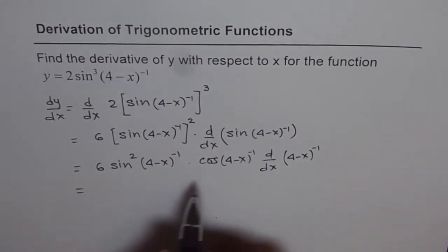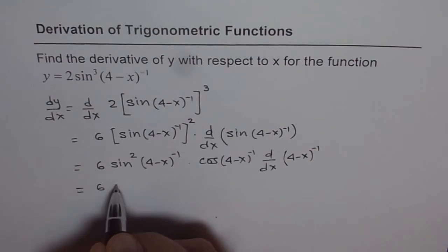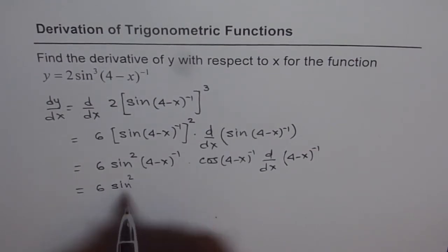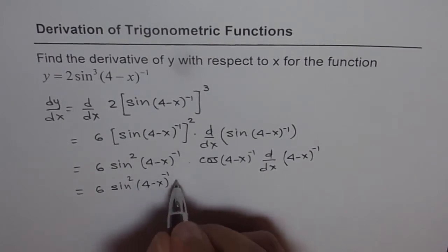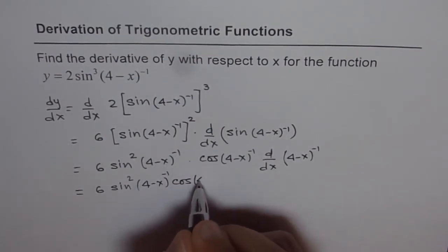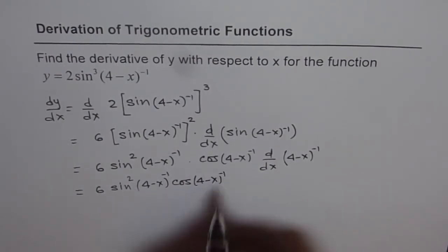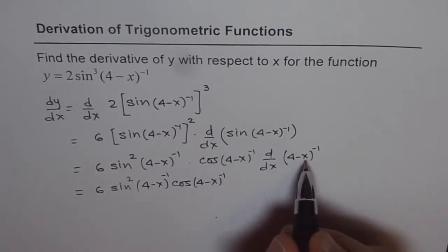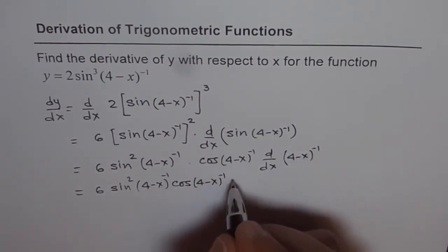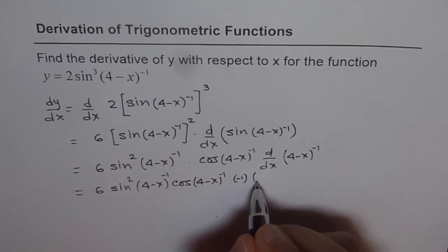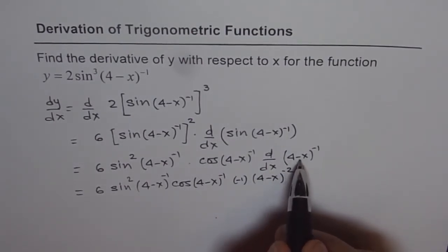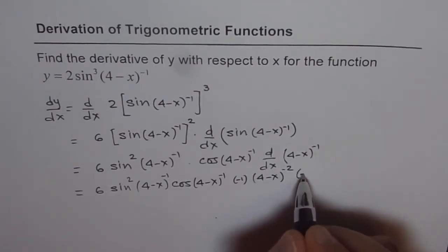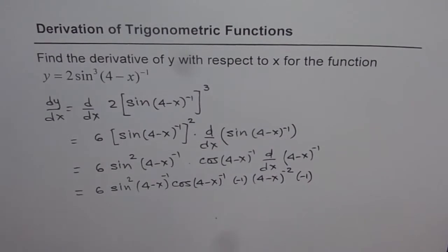So now we get 6 sin squared of 4 minus x to the power of minus 1, times cos of 4 minus x to the power of minus 1. And the derivative of 4 minus x to the power of minus 1 is minus 1 times 4 minus x to the power of minus 2, times the derivative of the inside function, which is the derivative of minus x, that is also minus 1.